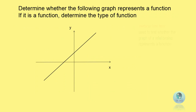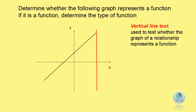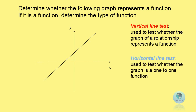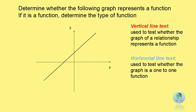The first one, vertical line test, is used to test whether the graph represents a function. We have to draw a few vertical lines parallel to the y-axis on the graph. If there is only one point of intersection in each line, then this graph is a function. The second one, horizontal line test, is used to test whether the graph is a one-to-one function. We have to draw a few horizontal lines parallel to the x-axis on the graph. If there is only one point of intersection in each line, then it is a one-to-one function. As you can see here, this graph is a one-to-one function.